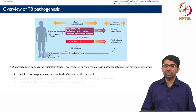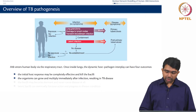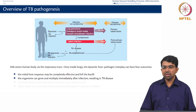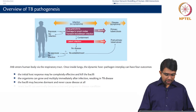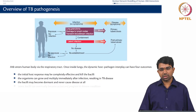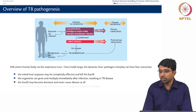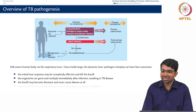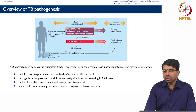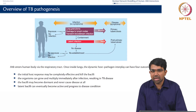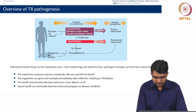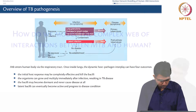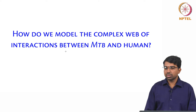So the initial host response may be completely effective and get rid of the bacillus, which is the ideal outcome. Or the organisms can grow and multiply immediately after infection, presenting active disease. Or the bacilli may be dormant and not do anything at all — a very common scenario especially for tuberculosis. There are people who have been suggesting strategies of trying to kick the bacterium out of persistence so that it can actually be treated, in a sense causing disease so it can be targeted, since the latent infection is dormant and untargetable. The latent bacillus can also become active later on and finally progress to the active disease condition.